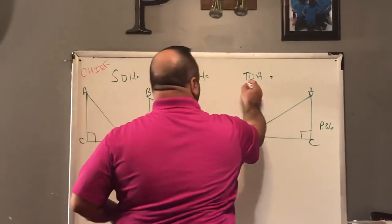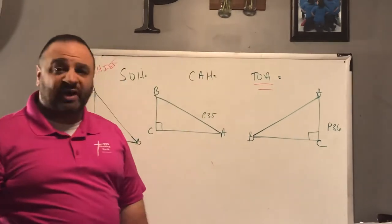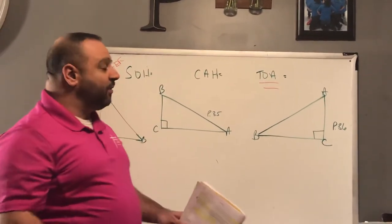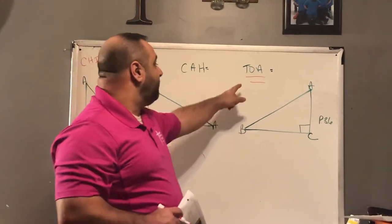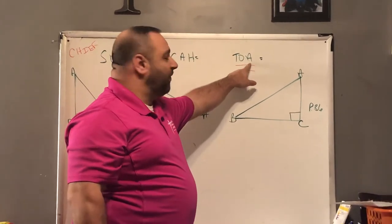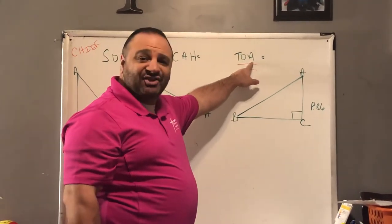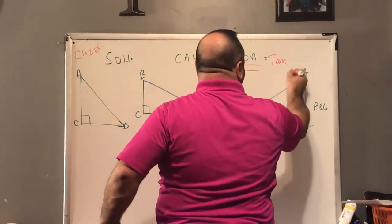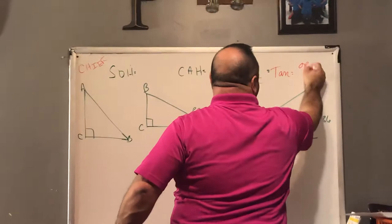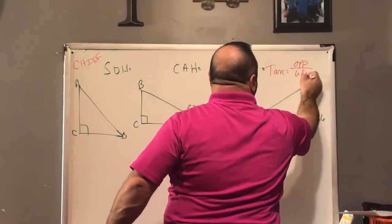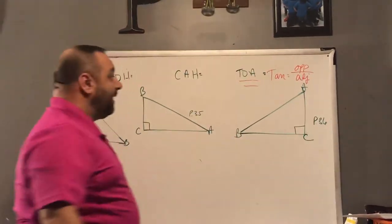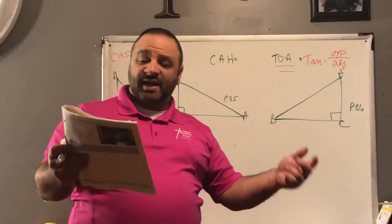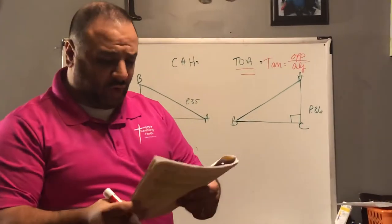Yesterday we particularly focused on the tangent ratio. In order to find the tangent, remember in a right triangle the tangent would be the opposite over adjacent. So tangent equals the side opposite over the side adjacent. We did our homework last night with this, so let's review our homework.